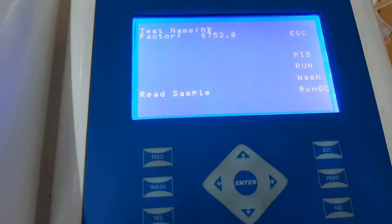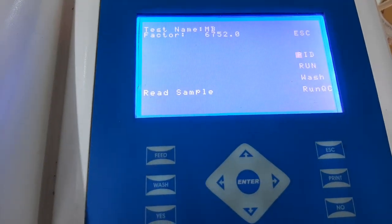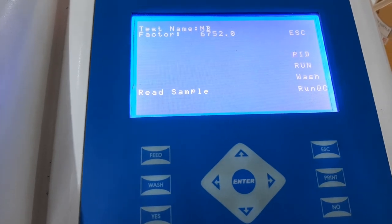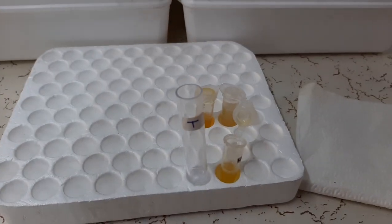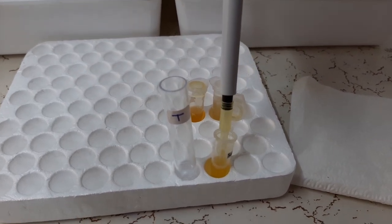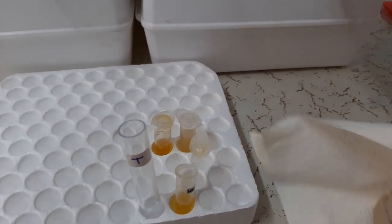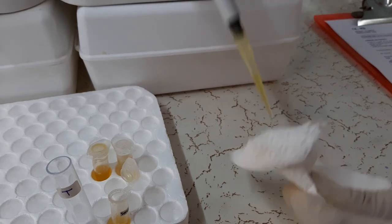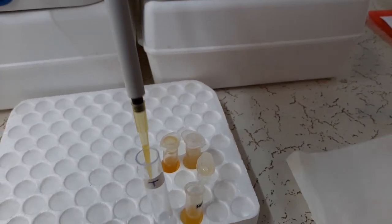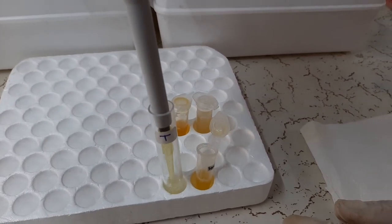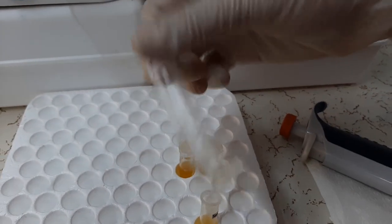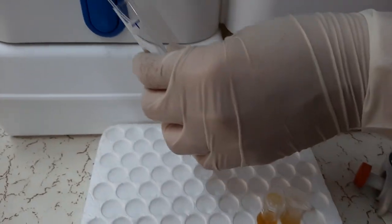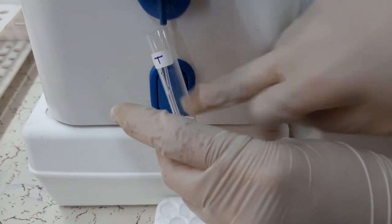Now, as you can see, the software shows the message read sample. So, now we will add the patient sample into the working solution. To do this, pipette 50 mL of patient sample and wipe the outside of the tip with a tissue paper. And then add the patient sample in the working solution. Mix it well and aspirate it into the instrument.